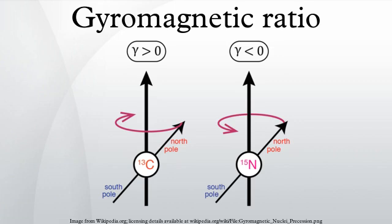In physics, the gyromagnetic ratio of a particle or system is the ratio of its magnetic dipole moment to its angular momentum, and it is often denoted by the symbol gamma. Its SI unit is the radian per second per tesla or, equivalently, the coulomb per kilogram.